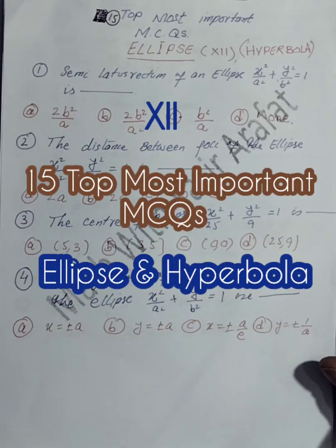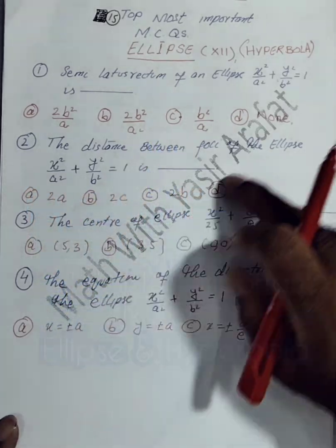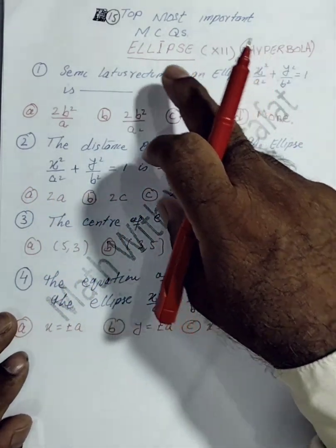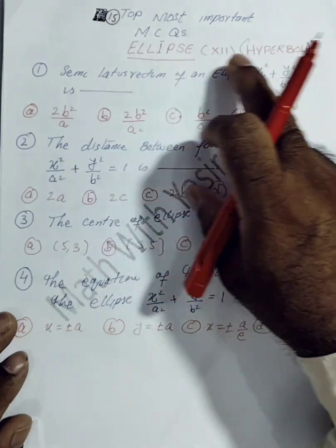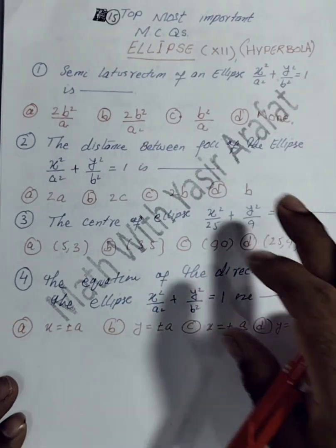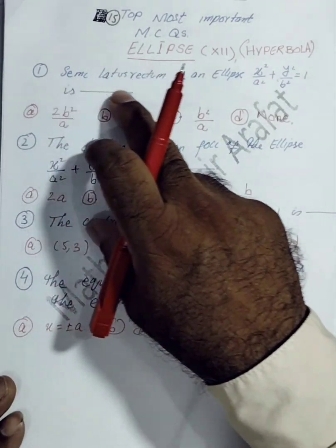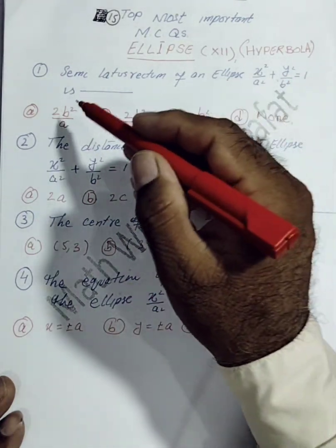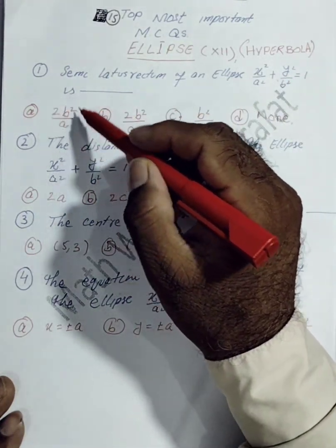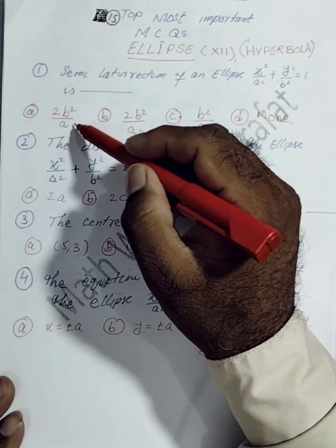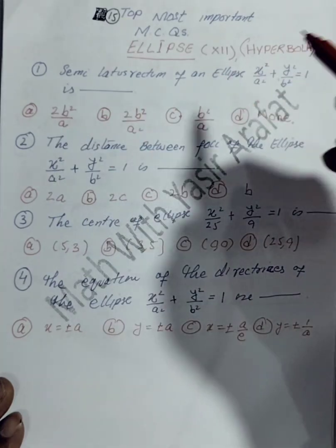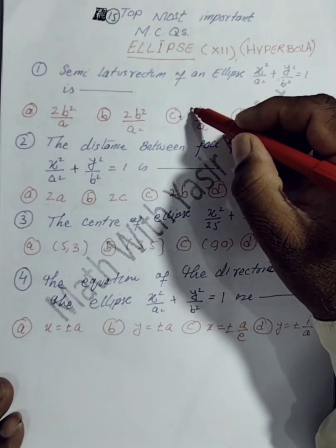Bismillah ar-Rahman ar-Rahim. Assalamualaikum, dear students. You are watching Math with Yasir Fahad. We have to discuss 15 most important MCQs of ellipse and hyperbola. The first MCQ: the semi-latus rectum of the parabola. The formula for latus rectum is 2B² over A, so the semi-latus rectum will be B² over A.